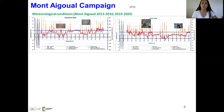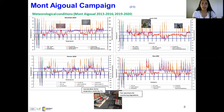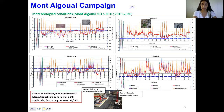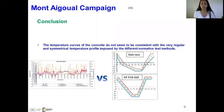Here are two photos showing our concrete blocks used for monitoring temperature in the winter season. We observed meteorological conditions at Mont-Égual for the winter season 2019–2020. The temperature profiles are not regular and not symmetrical compared with the temperature cycle applied in the norm. The freeze-thaw cycles, when they appear, are generally of an amplitude of 10°C, never 40°C — fluctuating from +5 to -5°C, not from +20 to -20°C as in the normative temperature cycles. The temperature curves of the concrete do not seem consistent with the very regular and symmetrical temperature profile imposed by the normative tests; the amplitude of the thermal cycles in the norm is 40°C versus only 10°C in real exposure.